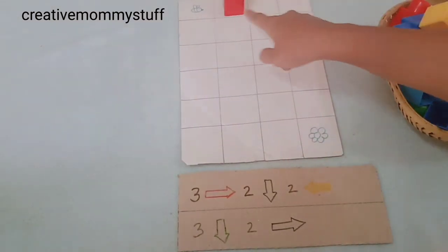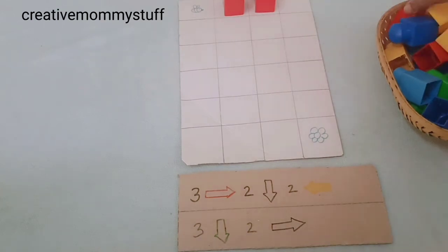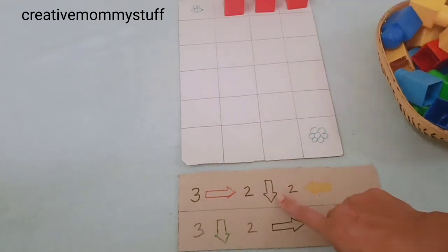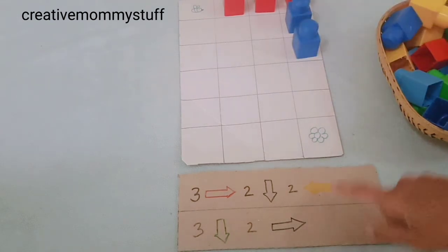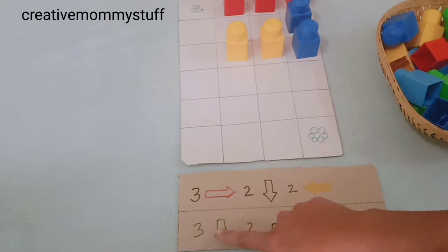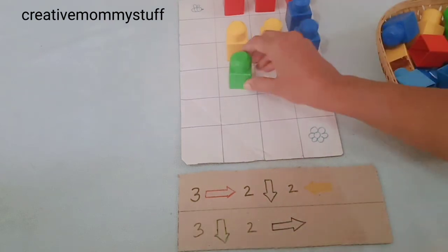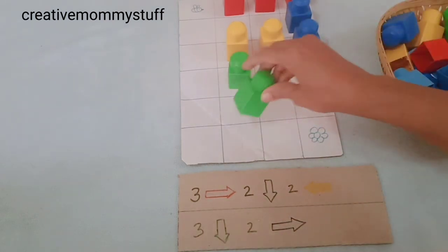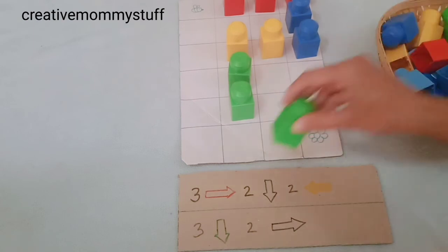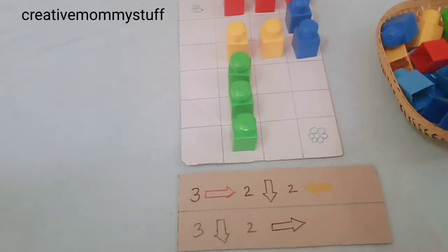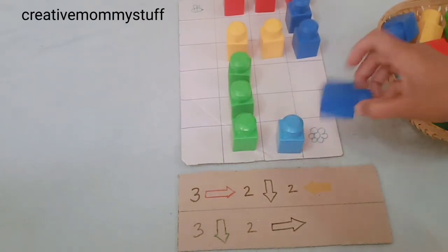Three right, so from the bee we have to move three right, two down with blue color, two left yellow—one, two—three down, one, two, three, and last two right blue color. So every time the kids will reach the maze using different routes.